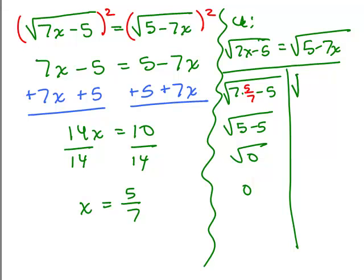And now let's simplify the right-hand side by plugging in 5 sevenths for x. So I get 5 minus, again the sevens cancel, I have 5 minus 5, which is square root of 0, also zero. So there we are, 5 sevenths is the correct answer.